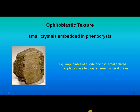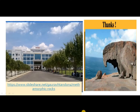Poikiloblastic texture. Small crystals which are embedded in a phenocryst — that means small crystals can be seen within the big crystal. In such a case, we say that the rock is exhibiting poikiloblastic texture. Thank you.